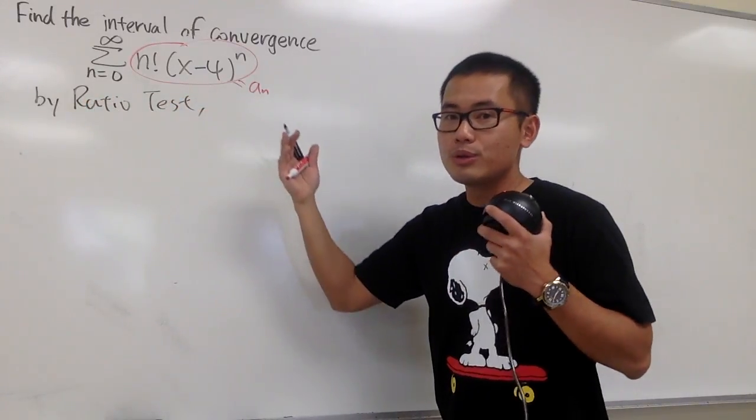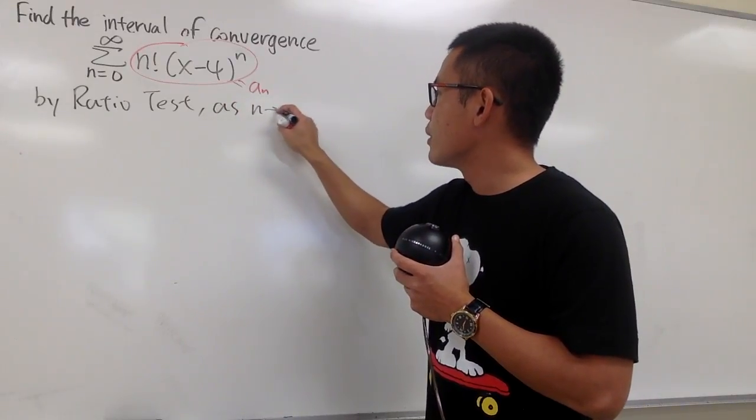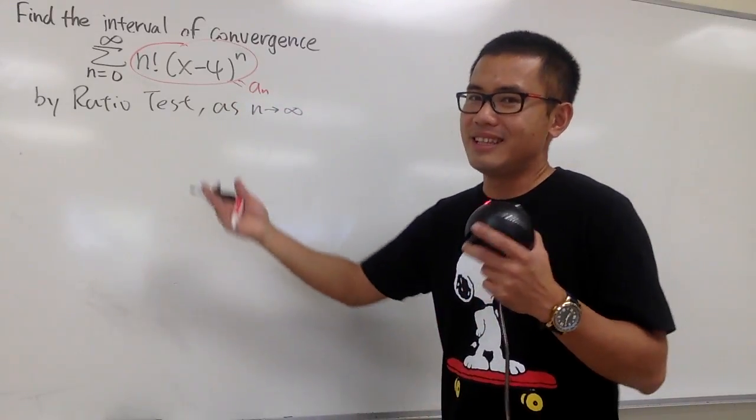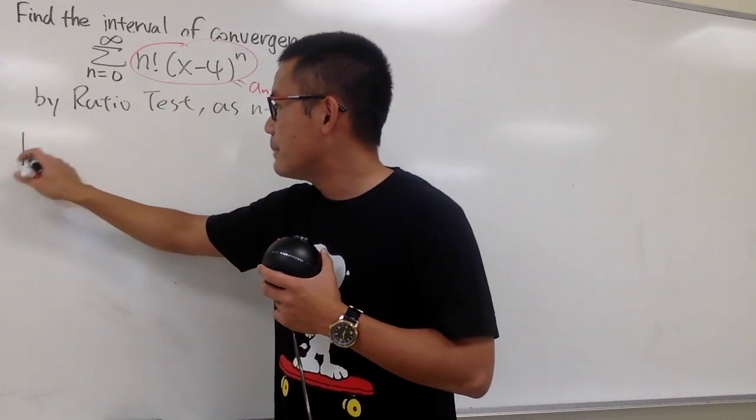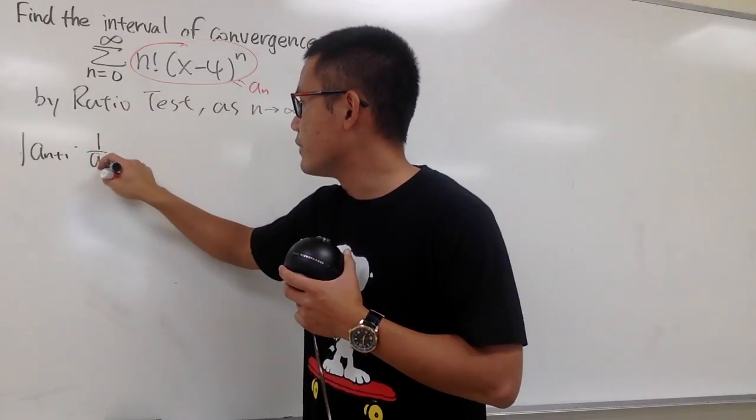When you are using the ratio test, we have to take the limit as n goes to infinity. Now, let's look at the expression: absolute value of a_(n+1) times the reciprocal of a_n.